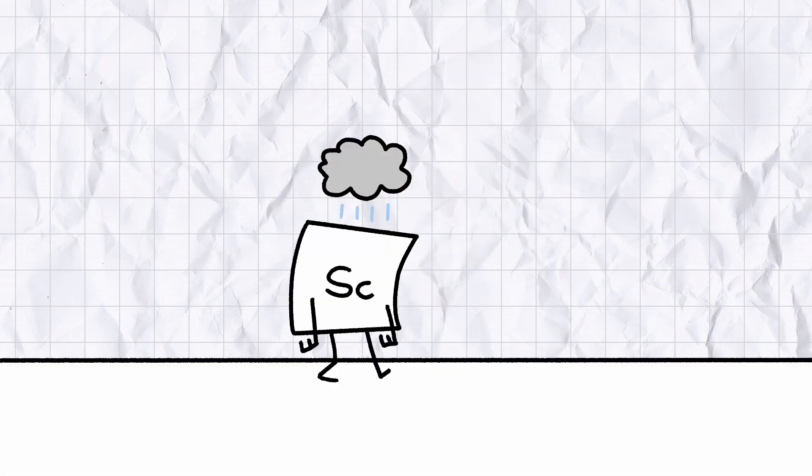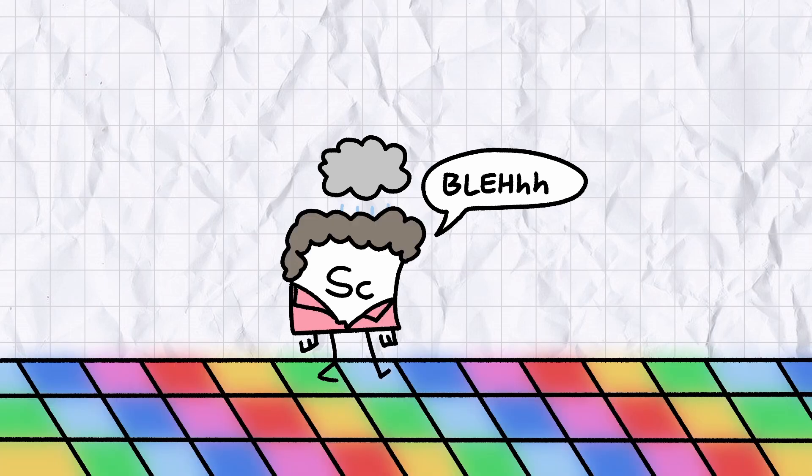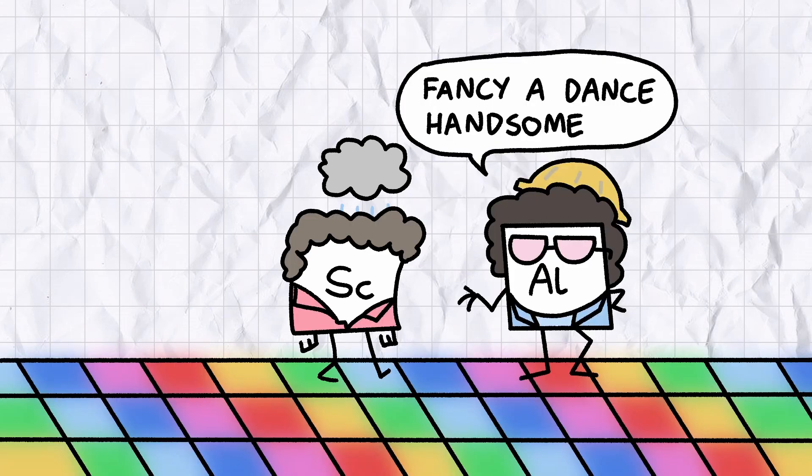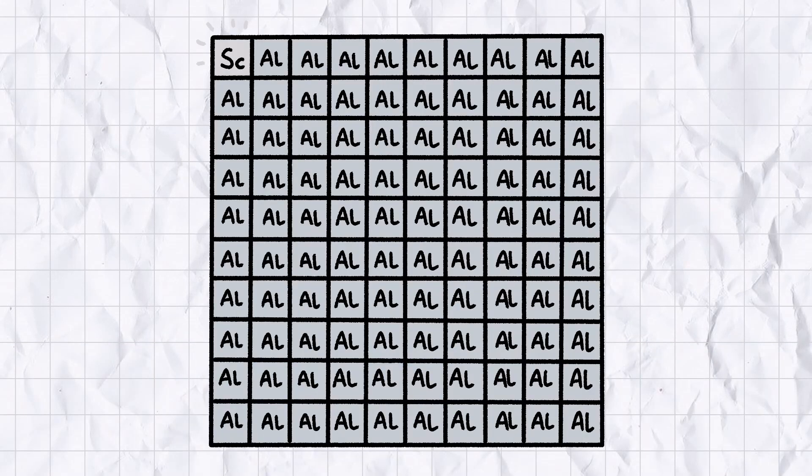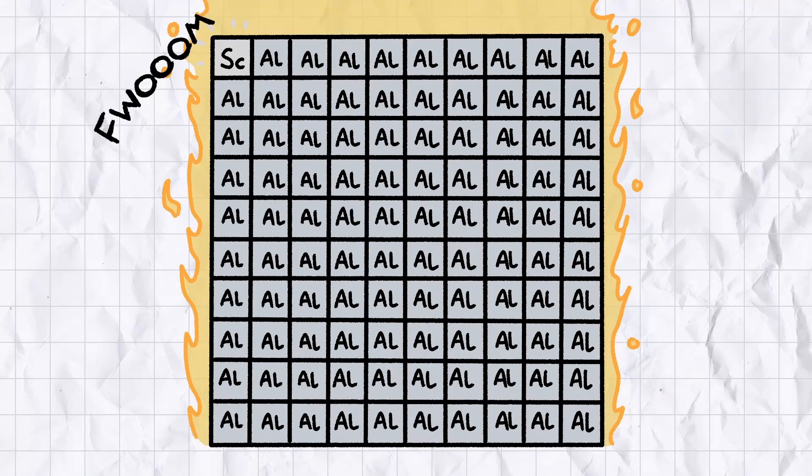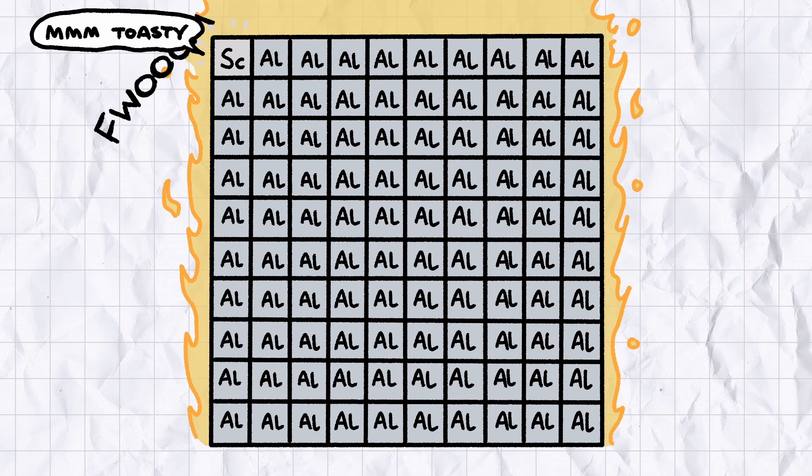Scandium was thought to be basically useless for decades, but its fortunes took an upward turn in the 1970s, when it was discovered to be an excellent component in aluminium alloys. Even at ratios less than 1 part to 100, scandium can drastically increase aluminium's strength and resistance to heat, with only a negligible increase in weight.